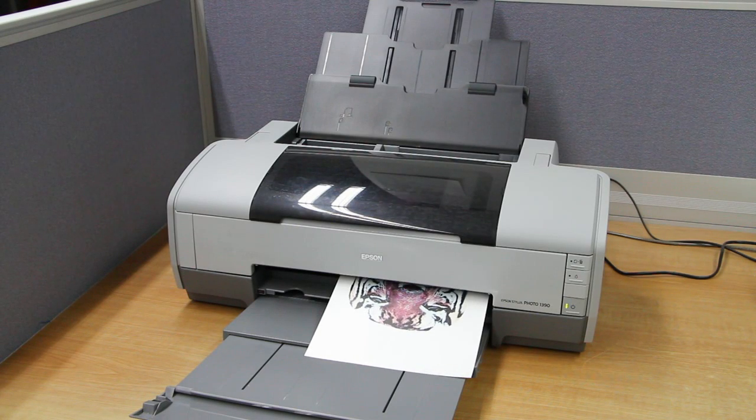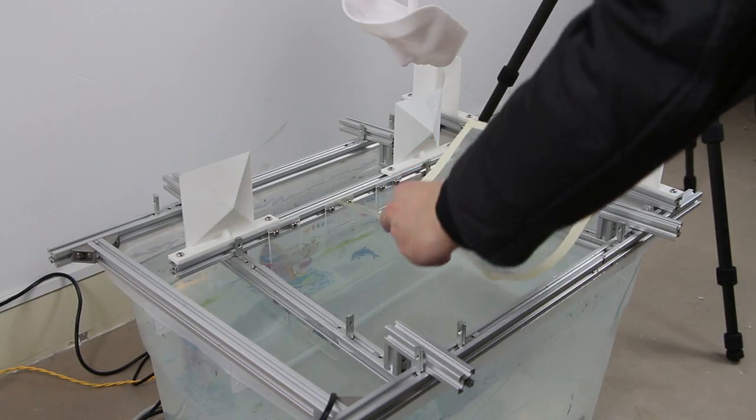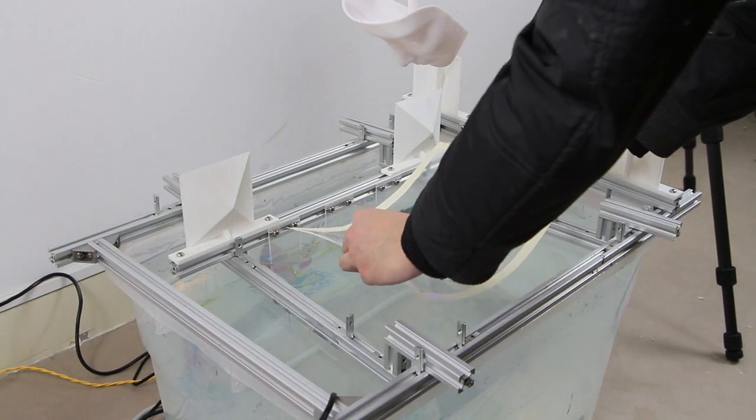After that, we print the film with a conventional inkjet printer, place it on the water, and finally conduct the physical hydrographic printing.